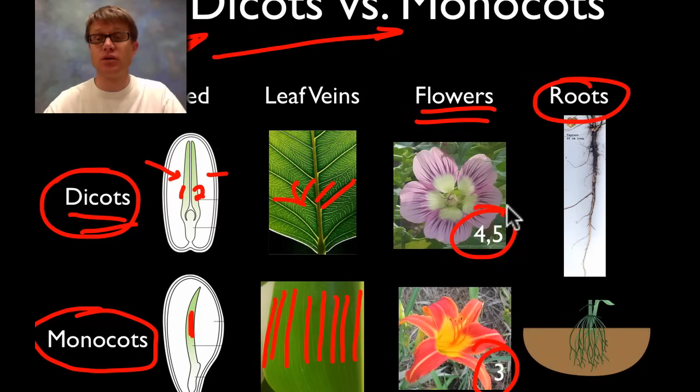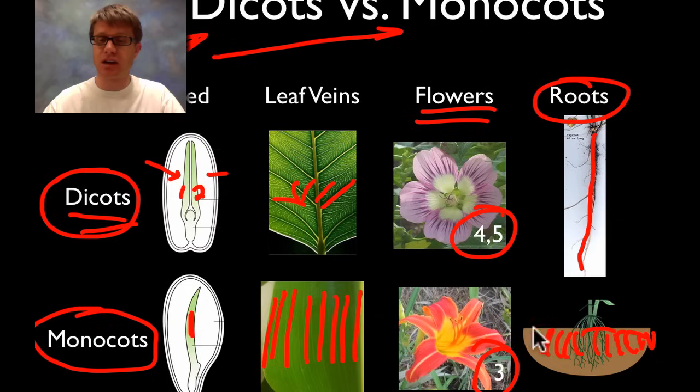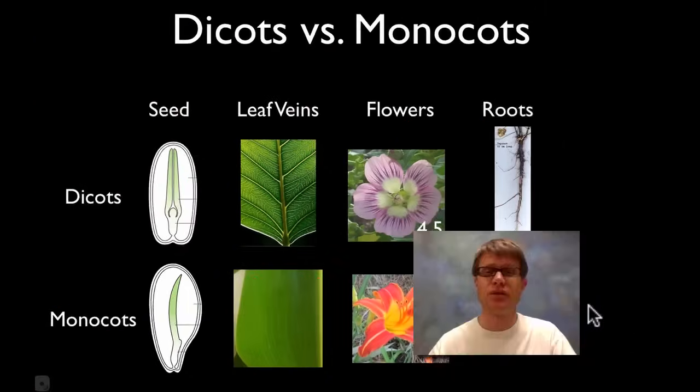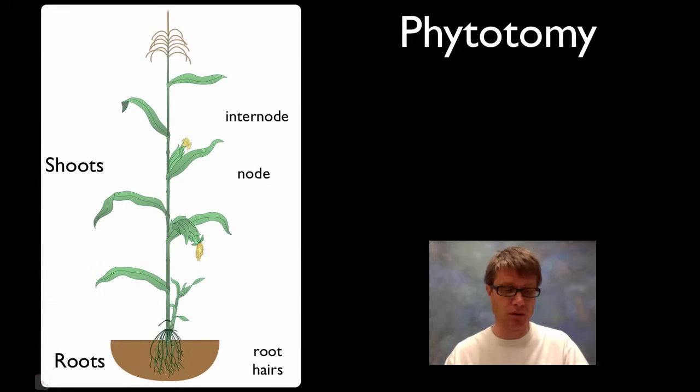And then another way to differentiate between the two is going to be roots. A dandelion, if you've ever tried to pull one out, they have this really big tap root system. But in monocots like grass they're going to have a net-like root system. It's going to be what makes up sod, for example, in grass. And so those are the different types of angiosperms.